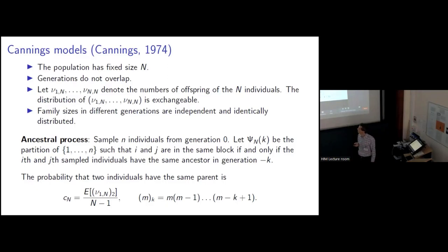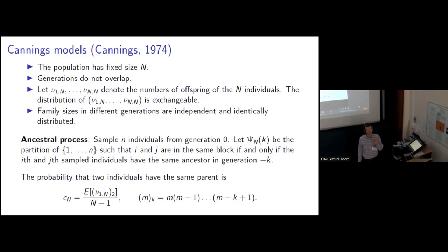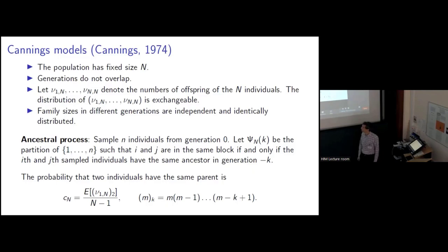As in the Wright-Fisher model, we can define the ancestral process that represents the genealogy of the population in a Cannings model. We sample n individuals from generation zero, and then define psi_N of k to be the partition of one through n, such that i and j are in the same block if and only if the i-th and j-th sampled individuals have the same ancestor in generation minus k. One can work out the probability that two individuals in a Cannings model have the same parent. We'll denote that by c_N, and it's given by this expression. Notice I'm using falling factorial notation, so this expression inside the expectation is nu_1^N times nu_1^N minus 1.